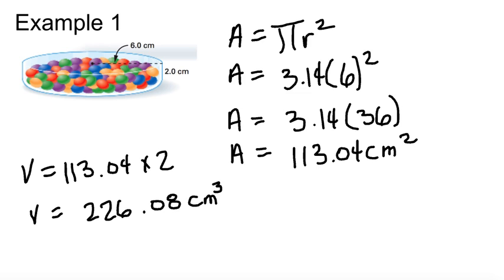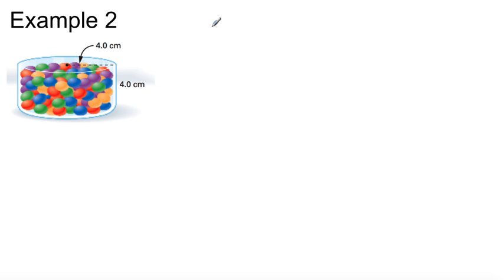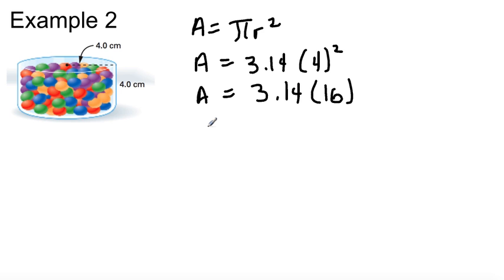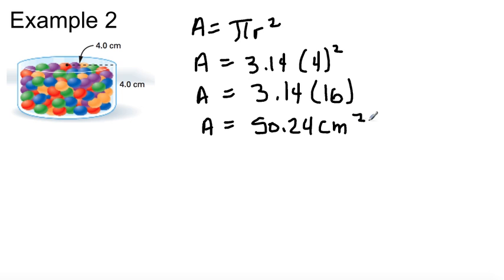Example 2: area equals pi times radius squared — 3.14 times 4 squared. That's 3.14 times 16. The area is 50.24 centimeters squared.